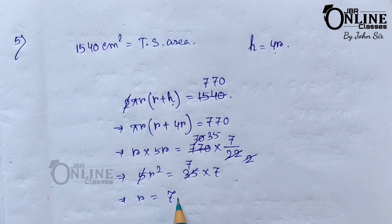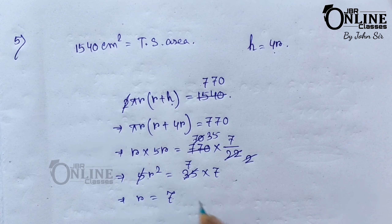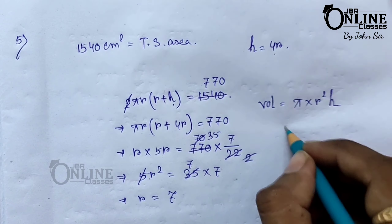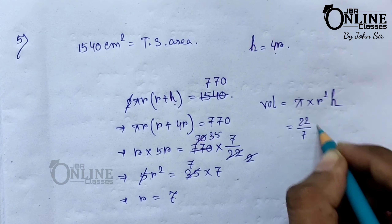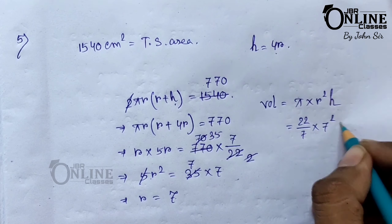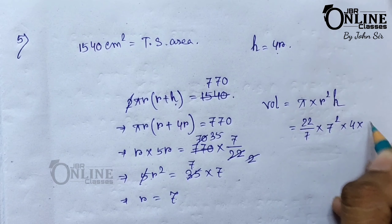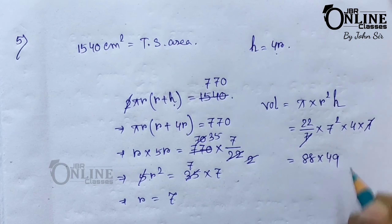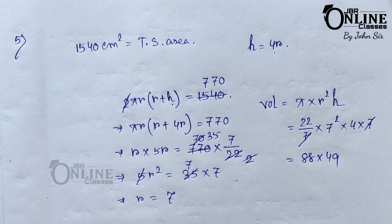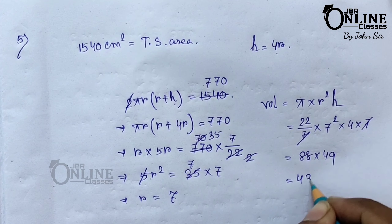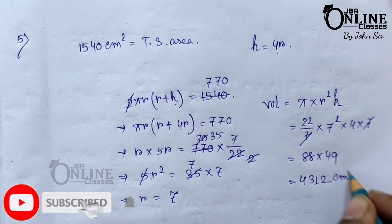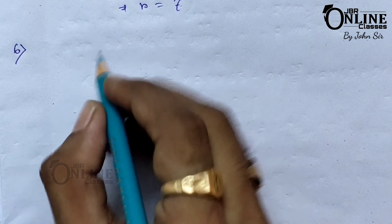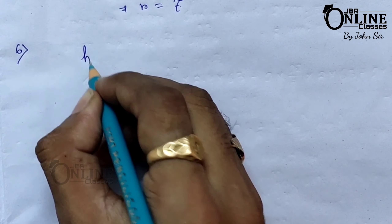Now find the volume of the cylinder. Volume equals pi r squared h, where pi is 22/7, r squared is 7 squared, and h is 4r equals 4 × 7 = 28. So 22/7 × 49 × 28: the 7s cancel, giving 22 × 7 × 28 = 88 × 49 equals 4312. The answer is 4312 centimeter cube.